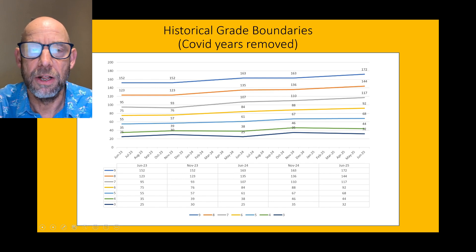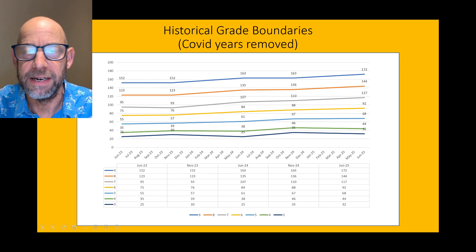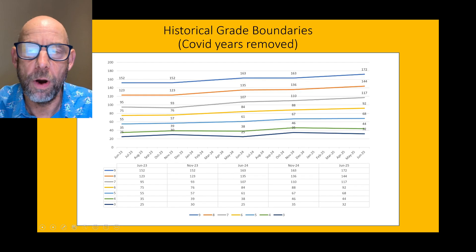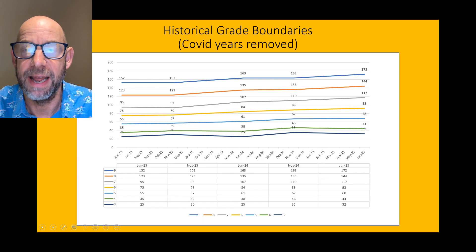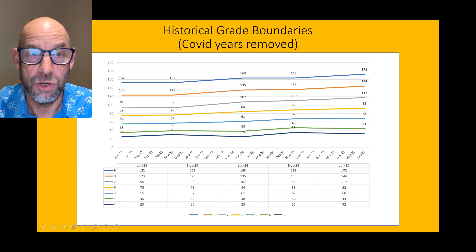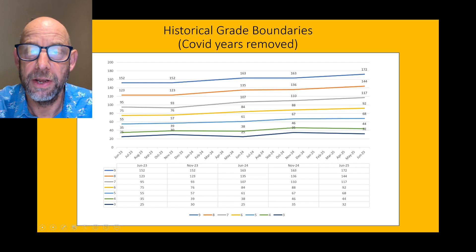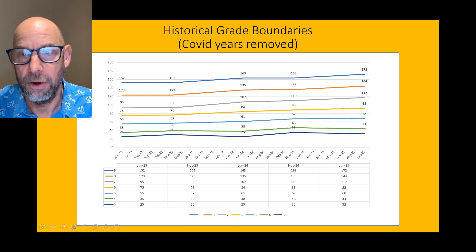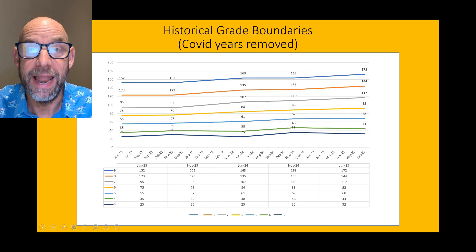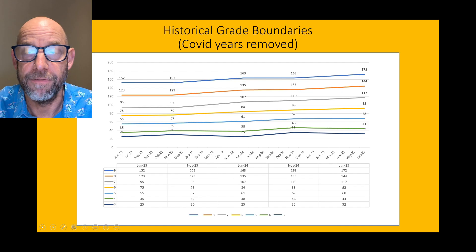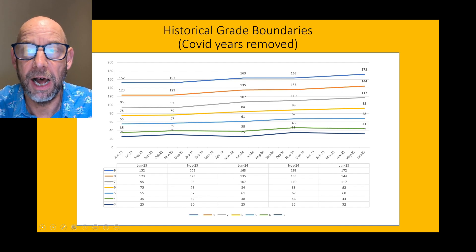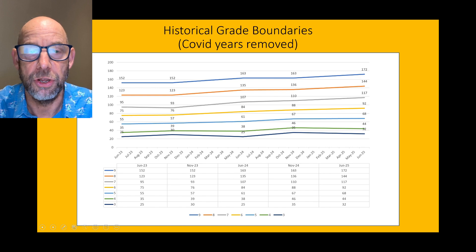Similarly, for a grade 8, if you look at that line and follow the trend, I reckon we're looking at about 144-146 for a grade 8. And a grade 7 — well, it's gone up, hasn't it? 93, 107, 110, 117. I don't see why it would be less than 117 in November. I think these grade boundaries are going up and it's getting harder and harder to get the grade that you want.